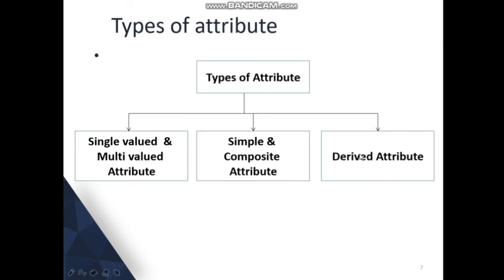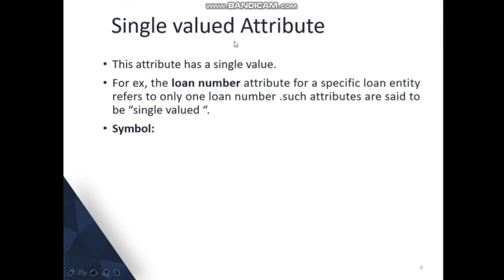There are many kinds of attributes. First is single valued and multi valued attributes, second is simple and composite attributes, and third is derived attributes. A single valued attribute has a single value — for example, a loan number for a specific loan entity refers to only one loan number. Similarly, a PAN number for a particular student is single valued, and roll number is also a single valued attribute. It is represented by a single oval.